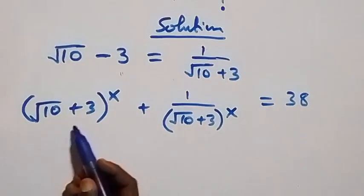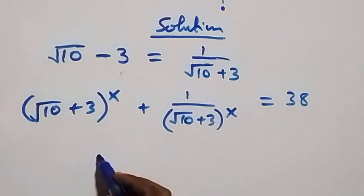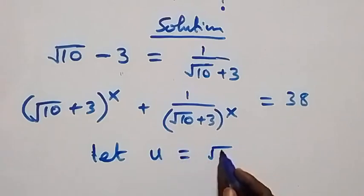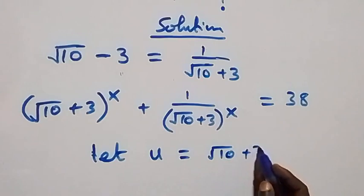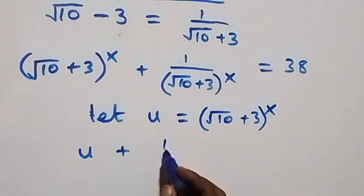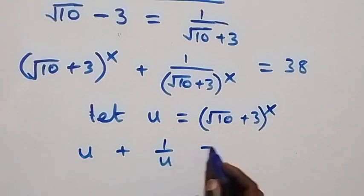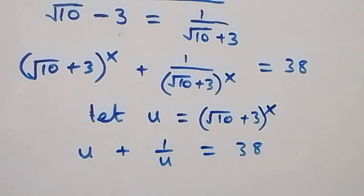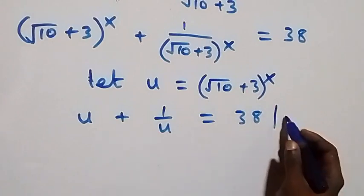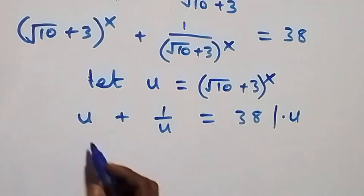Let u equal (√10 + 3) raised to power x. Then what we have becomes u plus 1 over u equals 38.